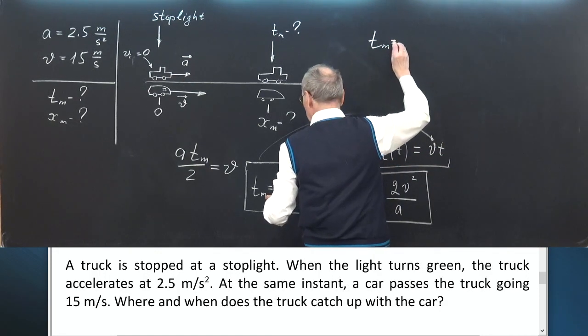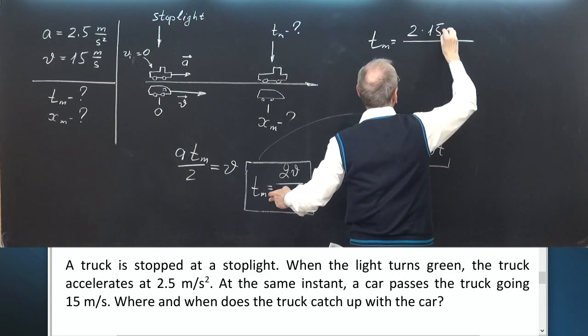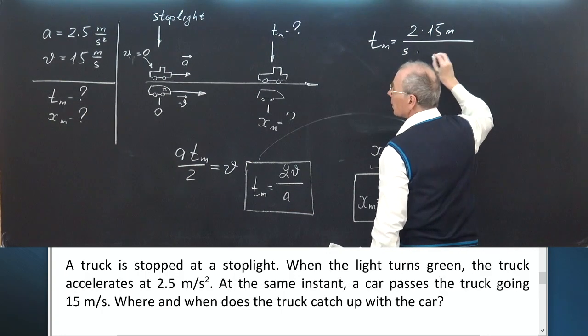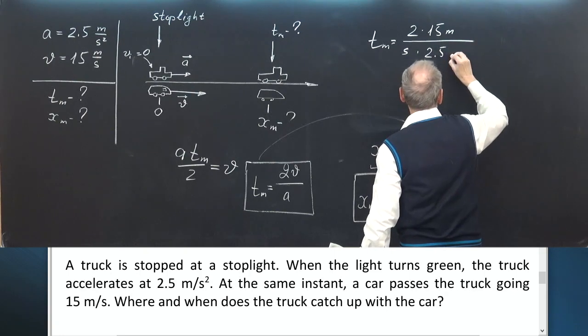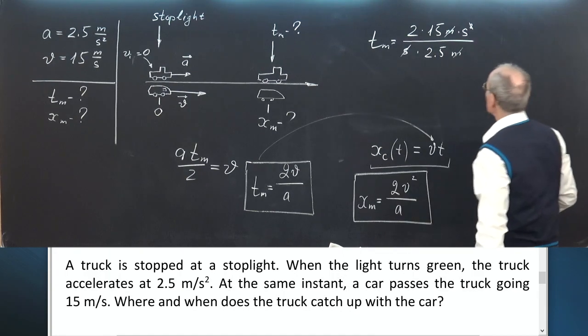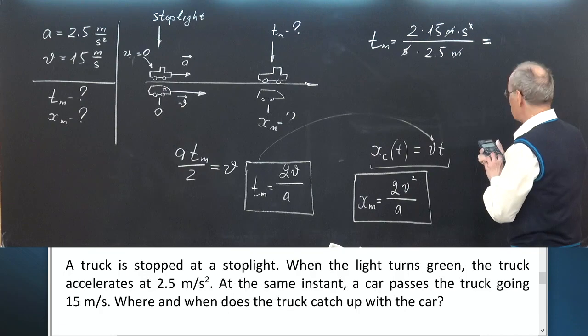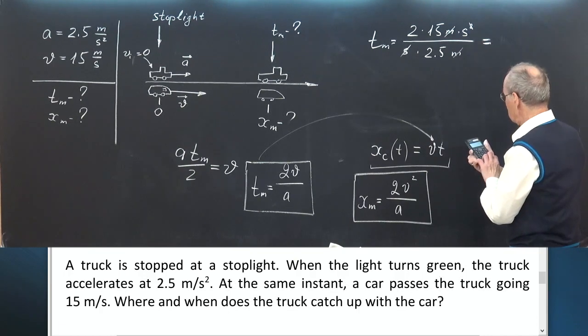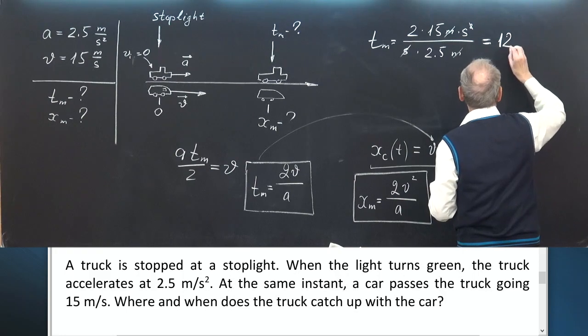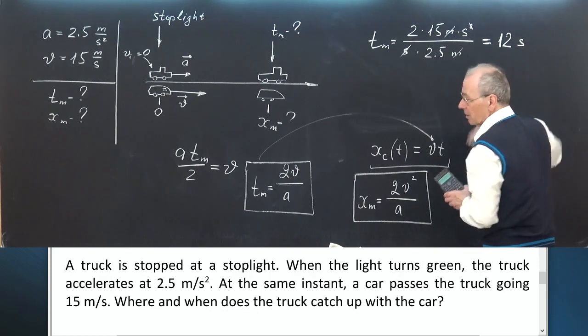Now let's calculate the result. T_m is twice 15 meters per second over 2.5 meters per second squared. Meters divide out, seconds partly divide out, and we have 2 times 15 divided by 2.5 gives 12 seconds. Two significant digits, that's okay, 12 seconds.